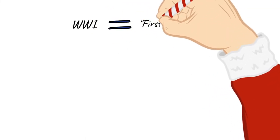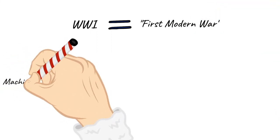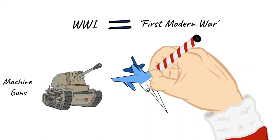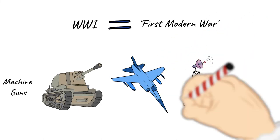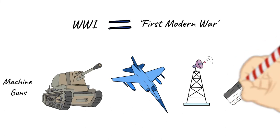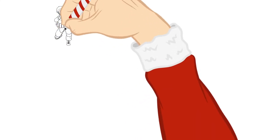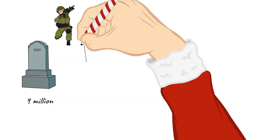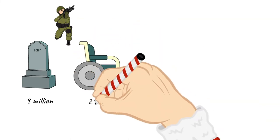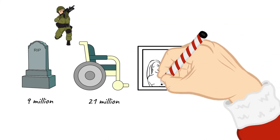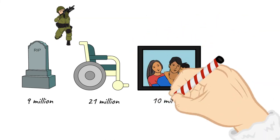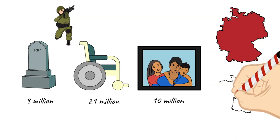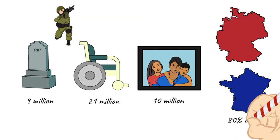World War I has been referred to as the first modern war. Many of the technologies now associated with military conflict — like machine guns, tanks, aerial combat, and radio communications — were introduced on a massive scale during World War I. The war took the lives of more than 9 million soldiers; 21 million more were wounded, and civilian casualties numbered close to 10 million. The two nations most affected were Germany and France, each of which sent some 80% of their male populations between the ages of 15 and 49 into battle.